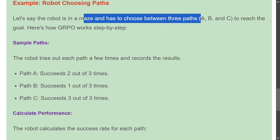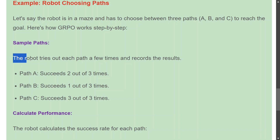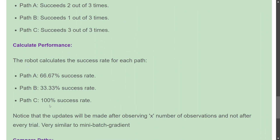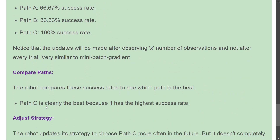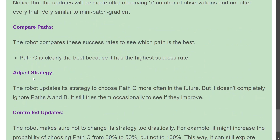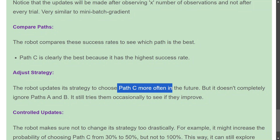Assume the robot is in a maze and has to choose between three paths — A, B, and C — to reach the goal. The robot tries each path a few times: path A succeeds two out of three times, path B succeeds one out of three times, and path C succeeds three out of three times. Path C is clearly the best, with a 100% success rate compared to 66% for A and 33% for B. The robot will then adjust the policy to prefer path C more often.